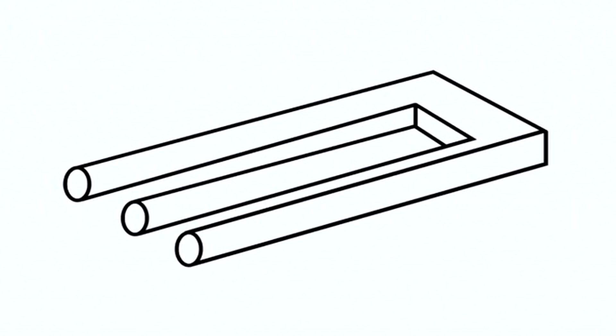This next optical illusion is known as the impossible trident. Focus on the right side of the image. It will look like the shape only has two cylindrical ends. But then when you focus on the left side of the image, it will look like there are three cylindrical ends to this shape. This optical illusion is super confusing and it will have you wondering how this is even possible. Take a look at this image but focus on each side of the photo. Comment below how many ends you think this shape has.